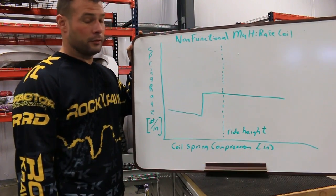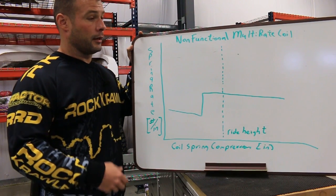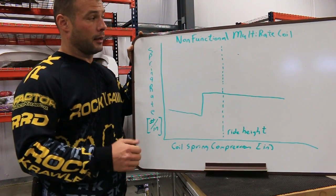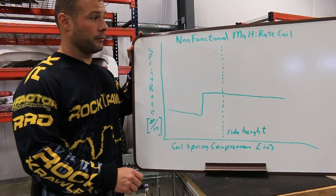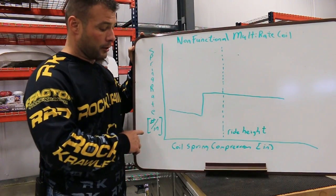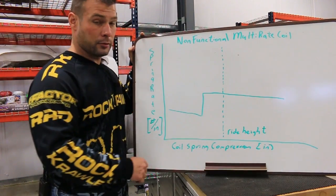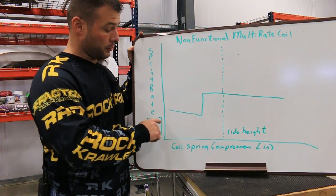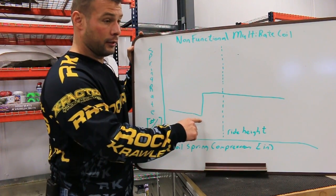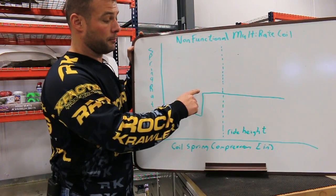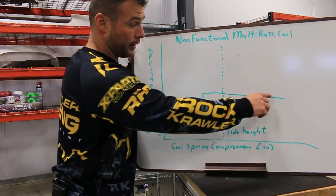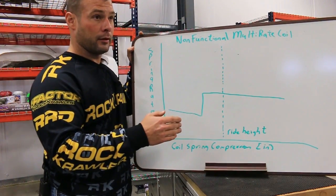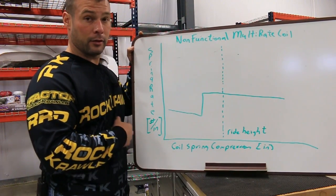Next, we'll get into the multi-rate coil springs. What is typically known as a dual-rate coil has a non-functional multi-rate feature. Again, looking at the bar graph of spring rate versus coil spring compression, your first rate where you have dead coils is a very soft linear rate. Then you'll experience a sharp jump up into the normal operating spring rate, and again it maintains a linear path. So around your ride height, the coil spring is functioning as a standard linear rate coil.